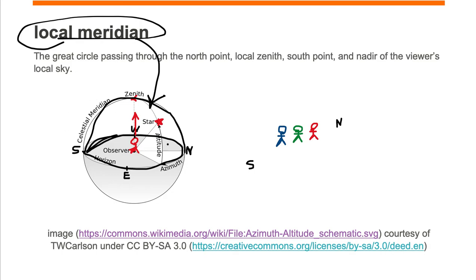The difference between the local meridian and the meridian is that the local meridian is personal to the person observing. Here we have three different people observing the sky, standing just two feet apart, side by side. The person in red points to their zenith, the person in green points to their zenith, and the person in blue points to their zenith. Each person has their own zenith, even though they're only two feet apart, so they each have their own local meridian.